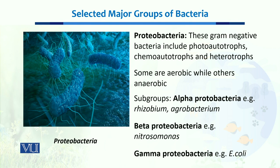Proteobacteria include photoautotrophs, meaning they can synthesize their own food from sunlight just like plants. Or they could be chemoautotrophs, which can also synthesize their own food but don't need sunlight — instead they use different chemical compounds as a source of energy. Then we have heterotrophs, which cannot synthesize their own food and are dependent on others. Some proteobacteria are aerobic while others are anaerobic.